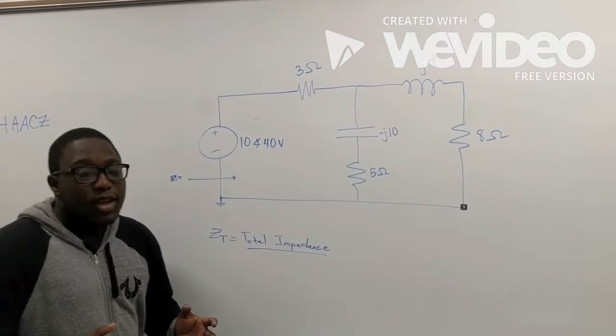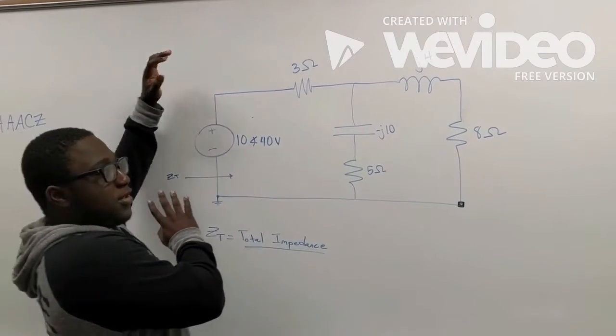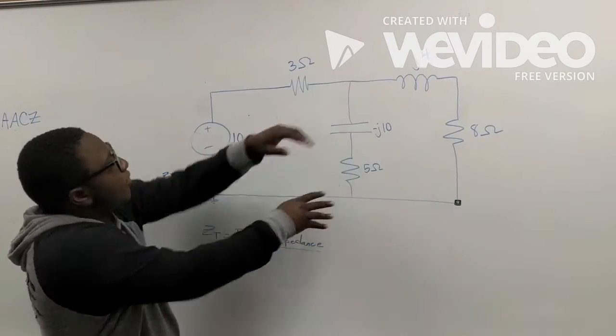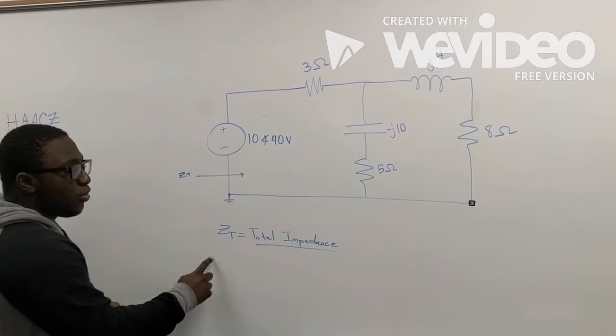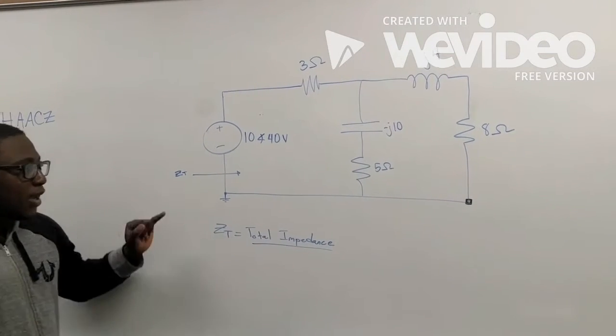Normally, in a DC circuit, we would calculate the total resistance of the entire circuit, but instead, for an AC circuit, we would calculate the total impedance, which is marked by ZT.